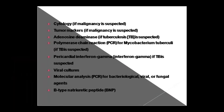Pericardial interferon gamma can also be assessed if TB is suspected. For viruses, cultures and molecular analysis can be sent. For bacterial and fungal agents, PCR can be performed. B-type natriuretic peptide (BNP) testing can also be done.